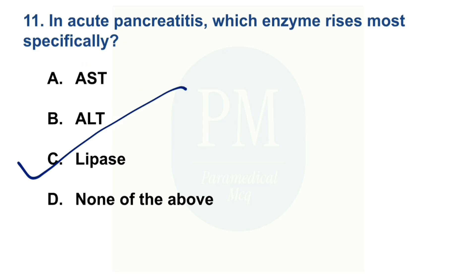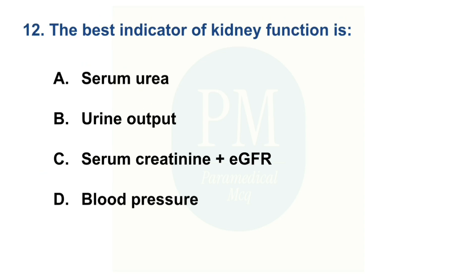The best indicator of kidney function is — Option A: serum urea. Option B: urine output. Option C: serum creatinine plus eGFR. Option D: blood pressure. The correct option is Option C: serum creatinine and eGFR.